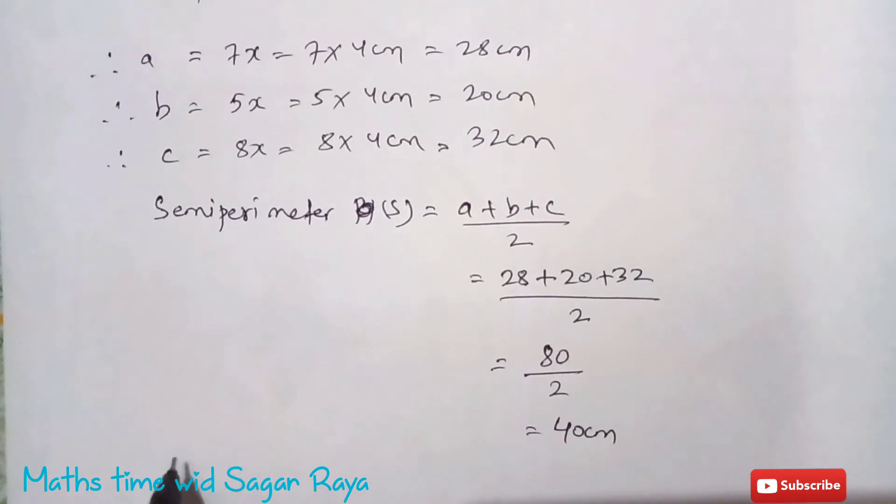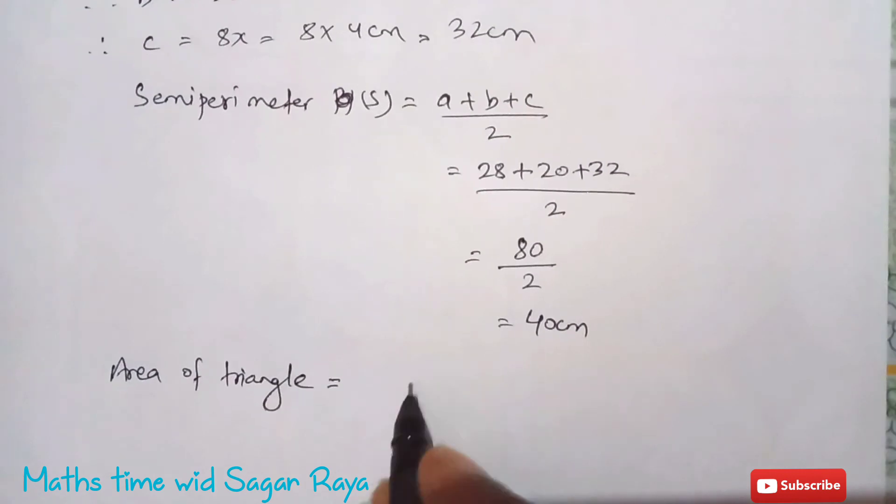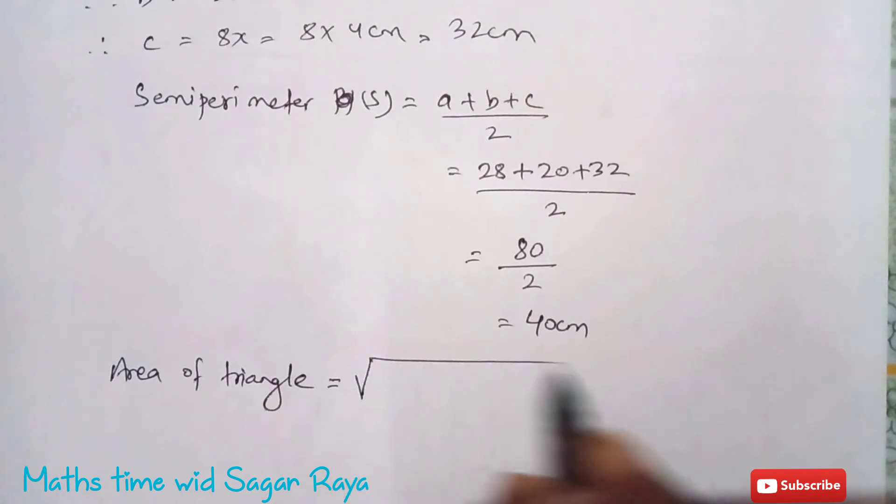Now use the formula for area of triangle. So area of triangle equals to root under s times s minus a, s minus b, s minus c.